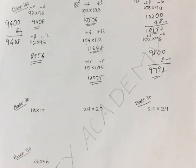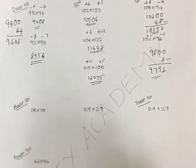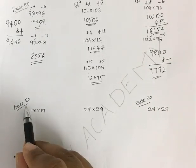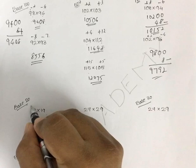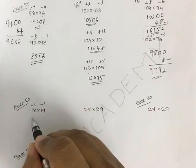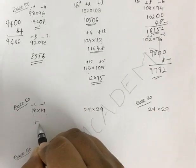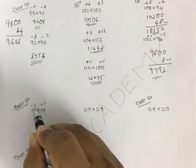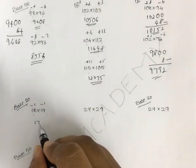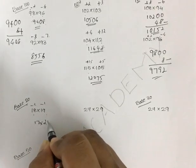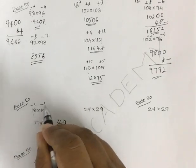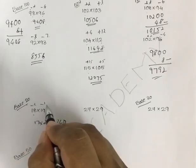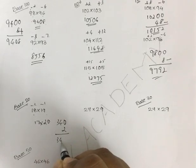This can be applied for any numbers taking any round-digit number as the base. Suppose it is 18 into 19 — take 20 as base. It is minus 2 and minus 1. 18 minus 1 is 17, and 19 minus 2 is also 17. The only thing is you multiply with the corresponding base 20, which gives 340. To that, you add minus 2 into minus 1, which is plus 2. So the answer is 342.